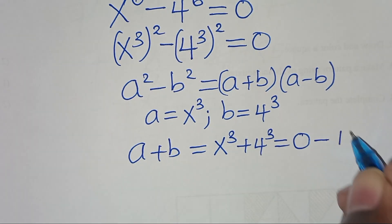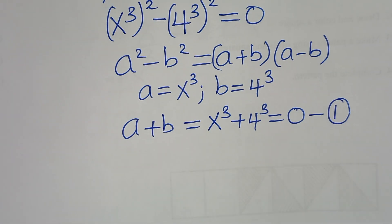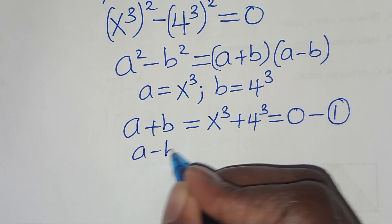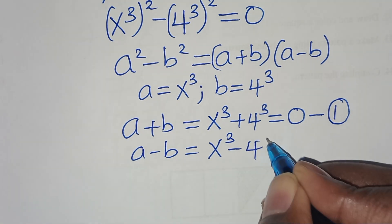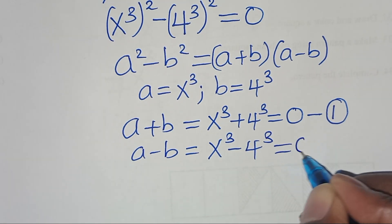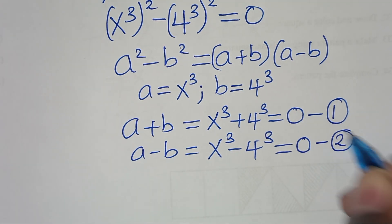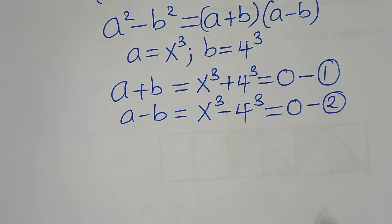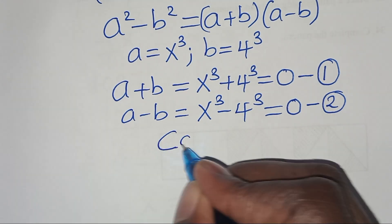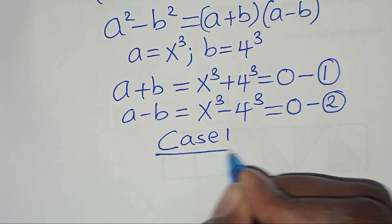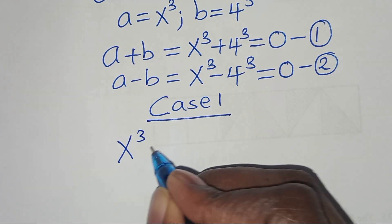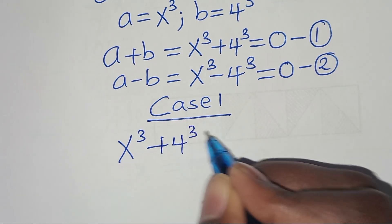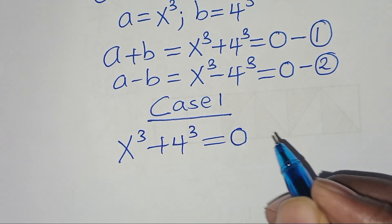Let's call that equation 1. We have a minus b, which is x³ subtract 4³, equal to 0 — let's call this equation 2. Now let's solve equation 1, which is Case 1: x to the power 3 plus 4 to the power 3 equals 0.